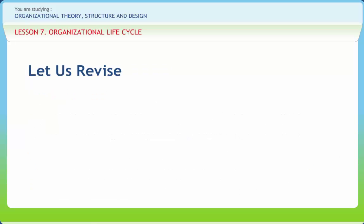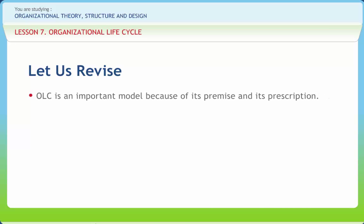Before we end, let us briefly revise what we have studied so far. OLC is an important model because of its premise and its prescription. The model's premise is that requirements, opportunities, and threats both inside and outside the business firm will vary depending on the stage of development in which the firm finds itself. For example, threats in the startup stage differ from those in the maturity stage.